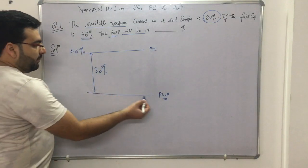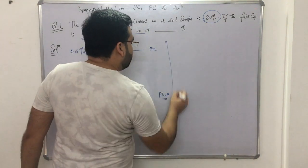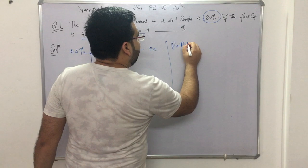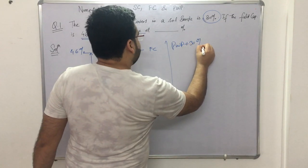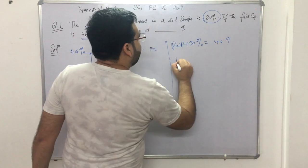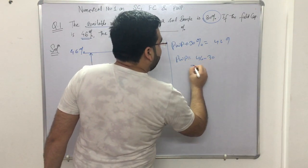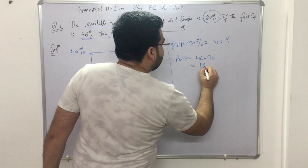It's very simple. Permanent wilting point plus 30% gives you field capacity, which is 46%. So permanent wilting point will be equal to 46 minus 30, that is 16%. This will be the correct answer.